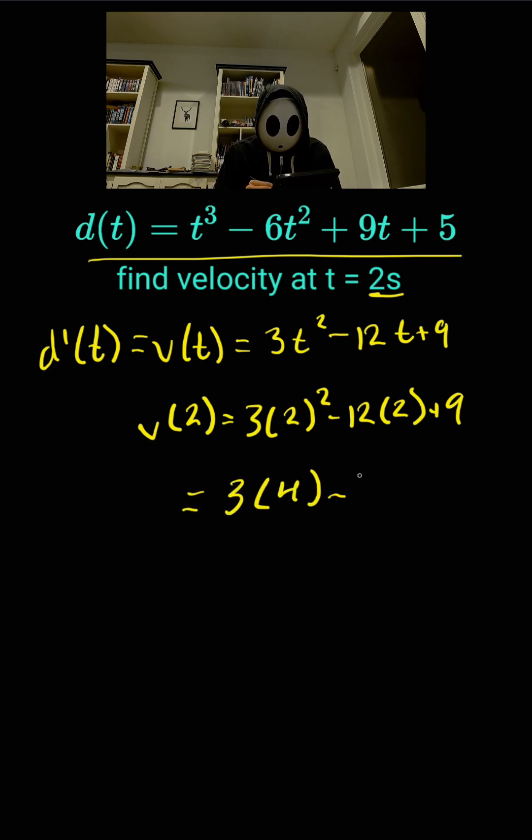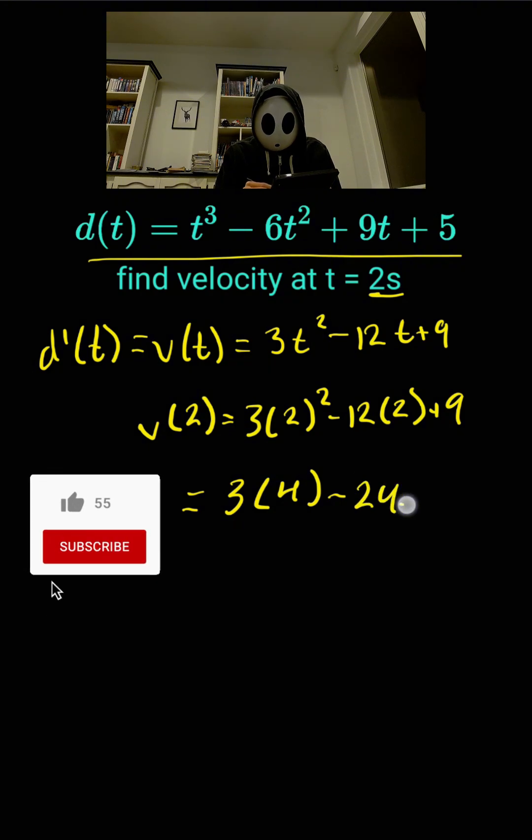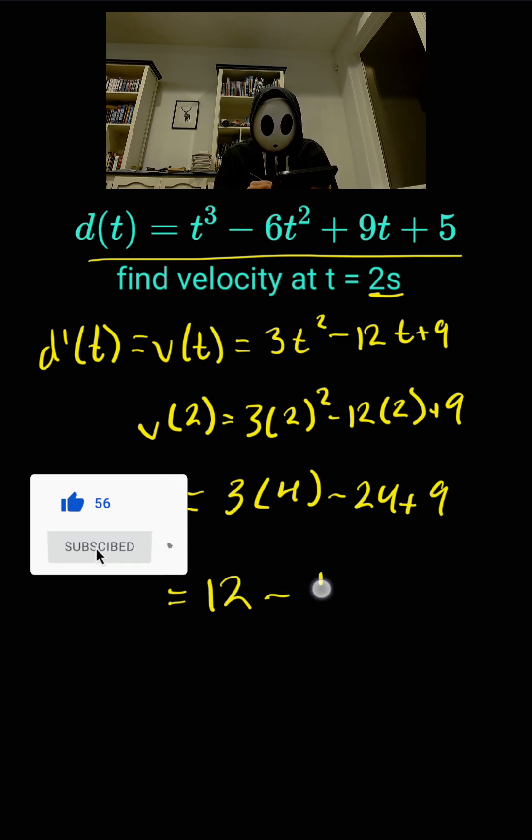2 squared is 4, minus 12 times 2 is 24, plus 9. 3 times 4 here is 12, and negative 24 plus 9 is negative 15, and 12 minus 5 is negative 3.